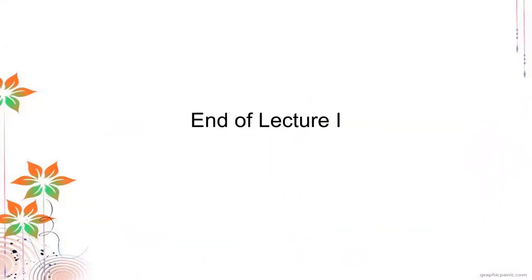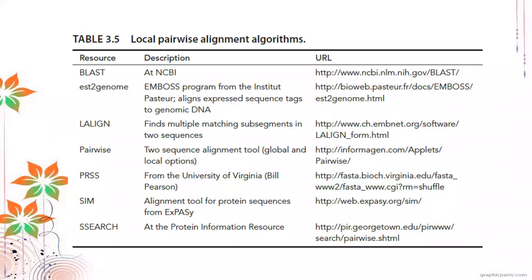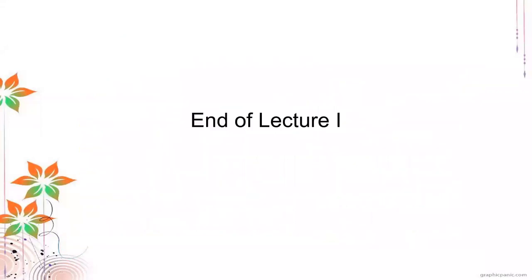Let's look at some pairwise alignment algorithms. We have BLAST from NCBI and S2 genome from EMBOSS, though the reference book is a bit old and some tools may no longer be functional. BLAST from NCBI remains the most commonly used and functional tool. That's it for lecture one — the next lecture will cover how to actually read BLAST scores.